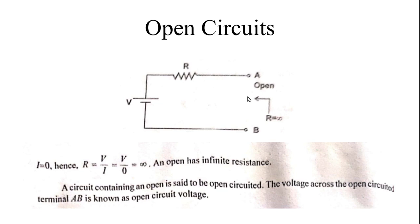If a circuit is said to be open, then the voltage across the open circuit terminal is known as open circuit voltage. Here the terminals A and B are open, so the voltage across the open circuit is the voltage across the A and B terminals.